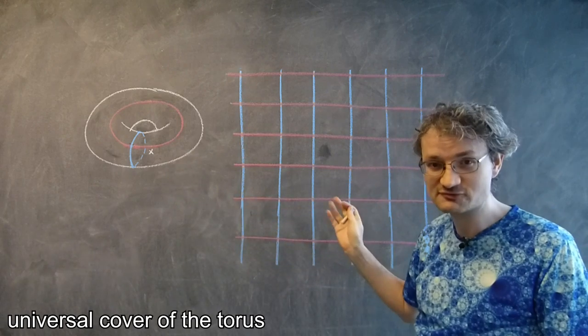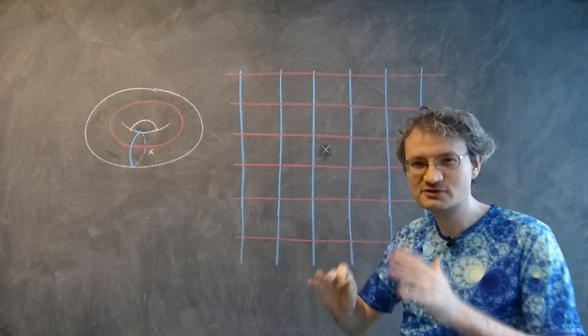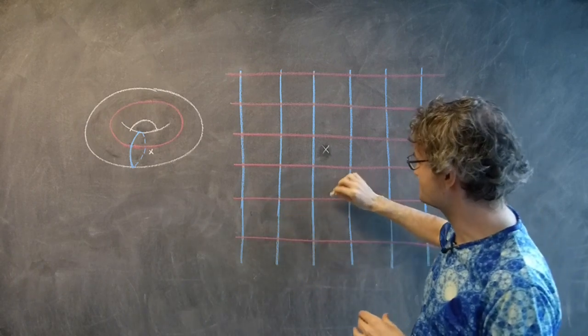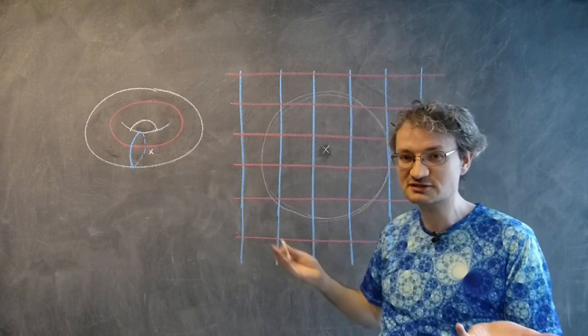We call this plane the universal cover of the torus. And let's suppose that you're here. And suppose also that you're only going to see out some distance. So maybe I'm going to see out this far. This is my visual circle.